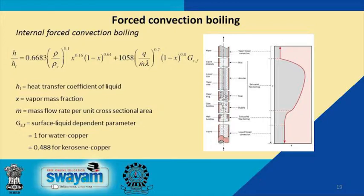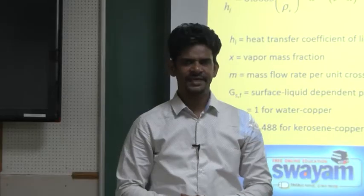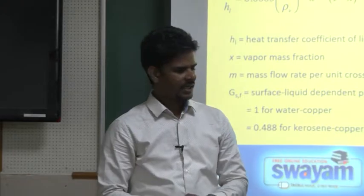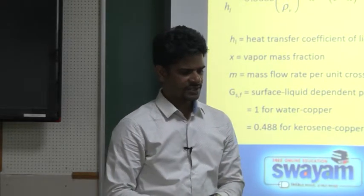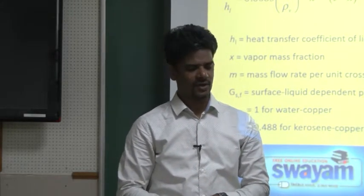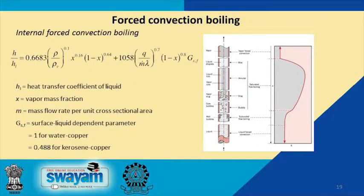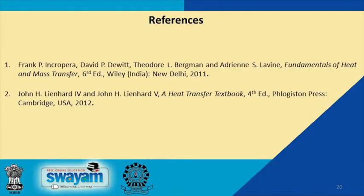Correlations have been proposed to calculate the heat transfer coefficient for this kind of internal forced convection boiling. The correlation depends on the mass flow rate per cross-section of the fluid, the vapor quality fraction x, and a system-dependent parameter C_SF depending on the liquid and surface combination. H_L here is the heat transfer coefficient of the pure liquid in the forced convective regime. For this presentation the following references were used. Thank you.